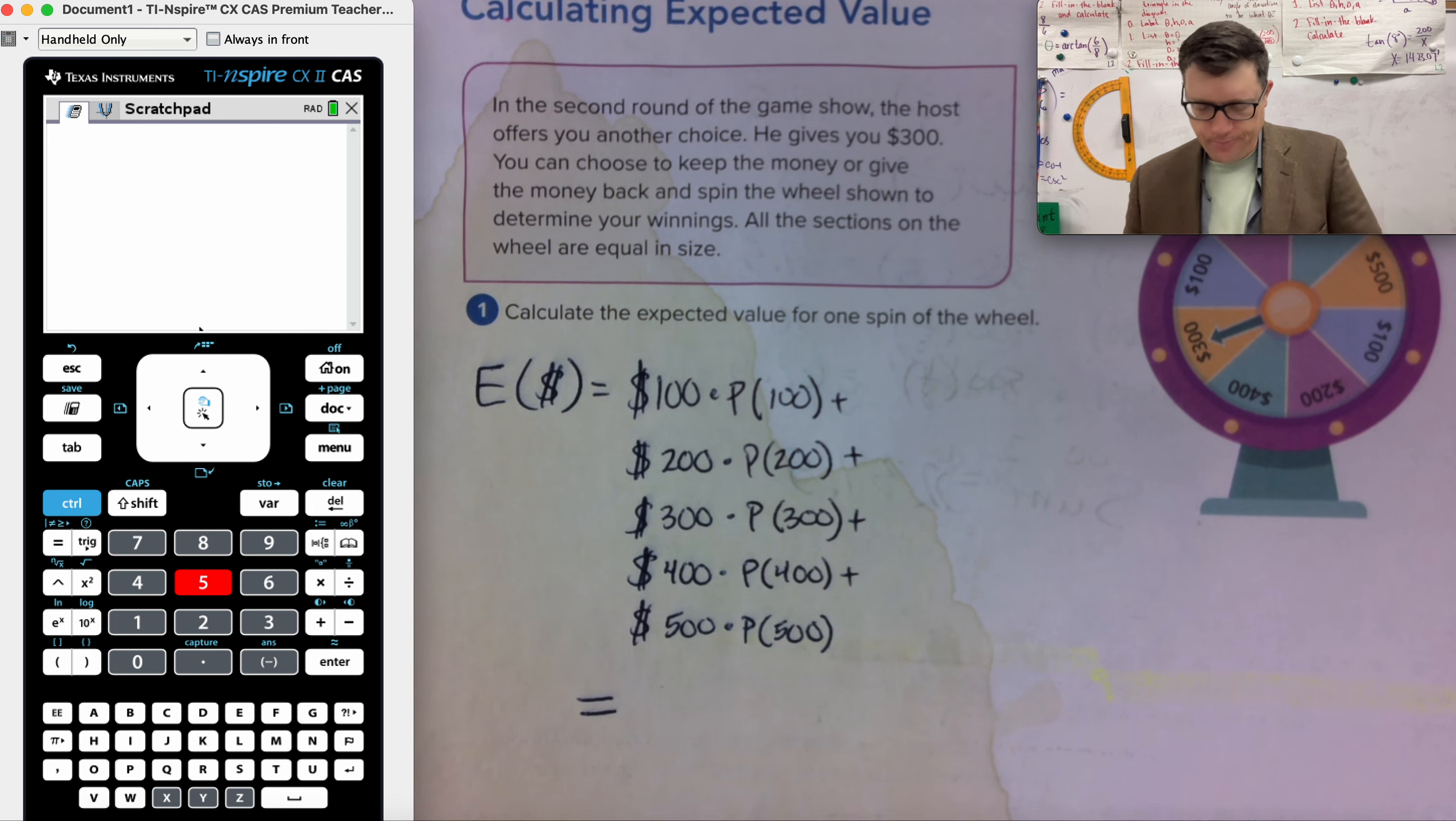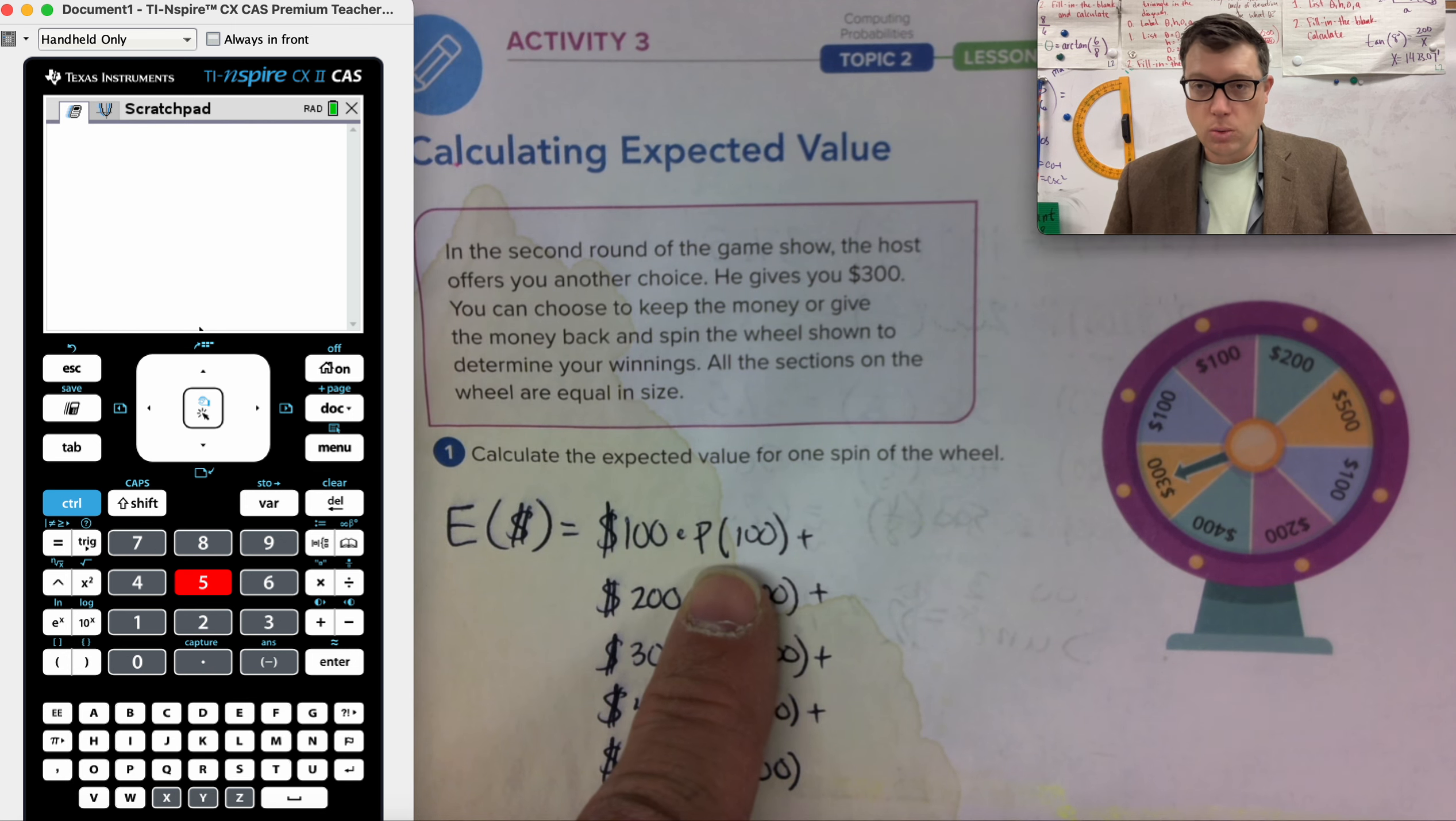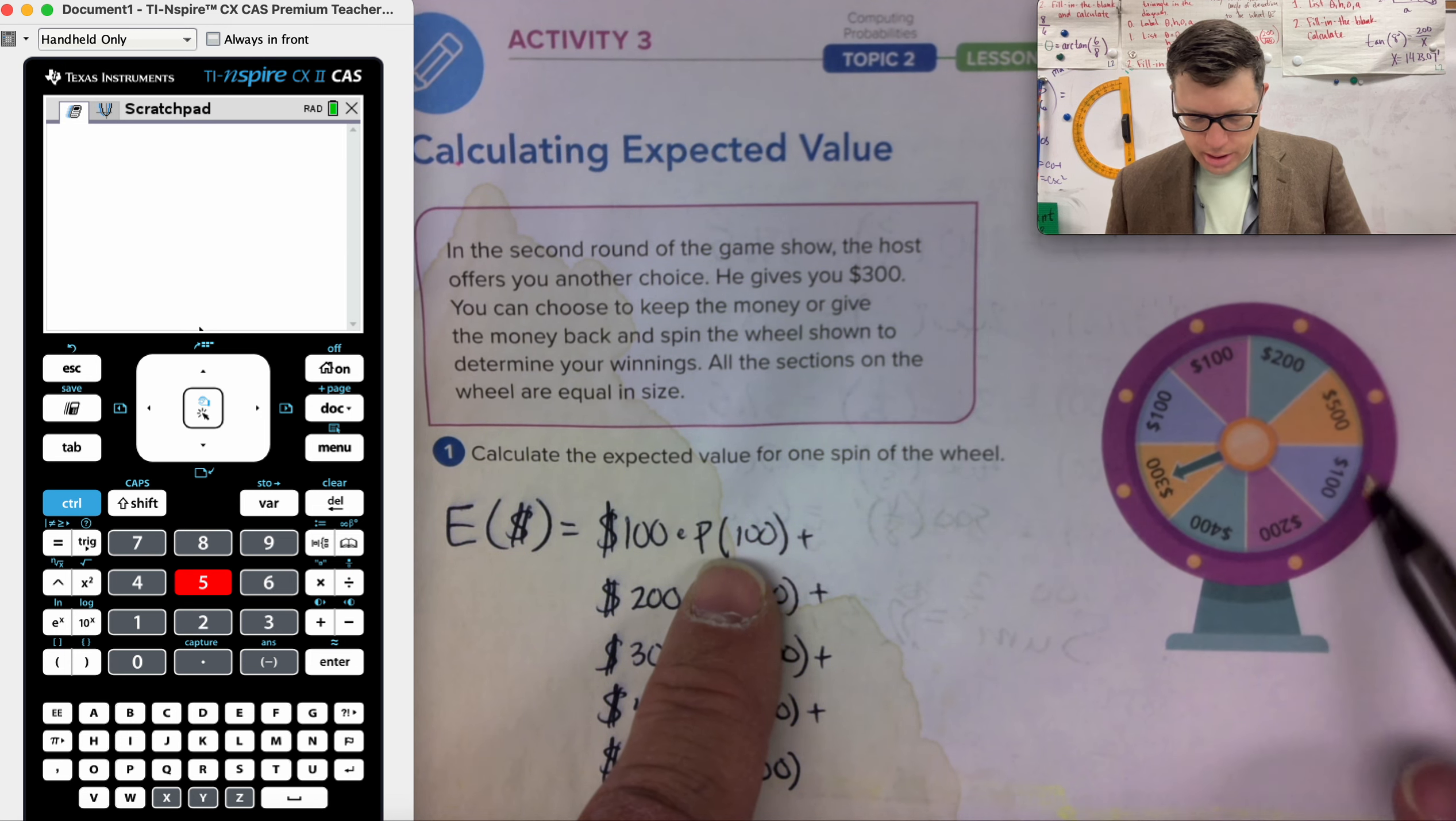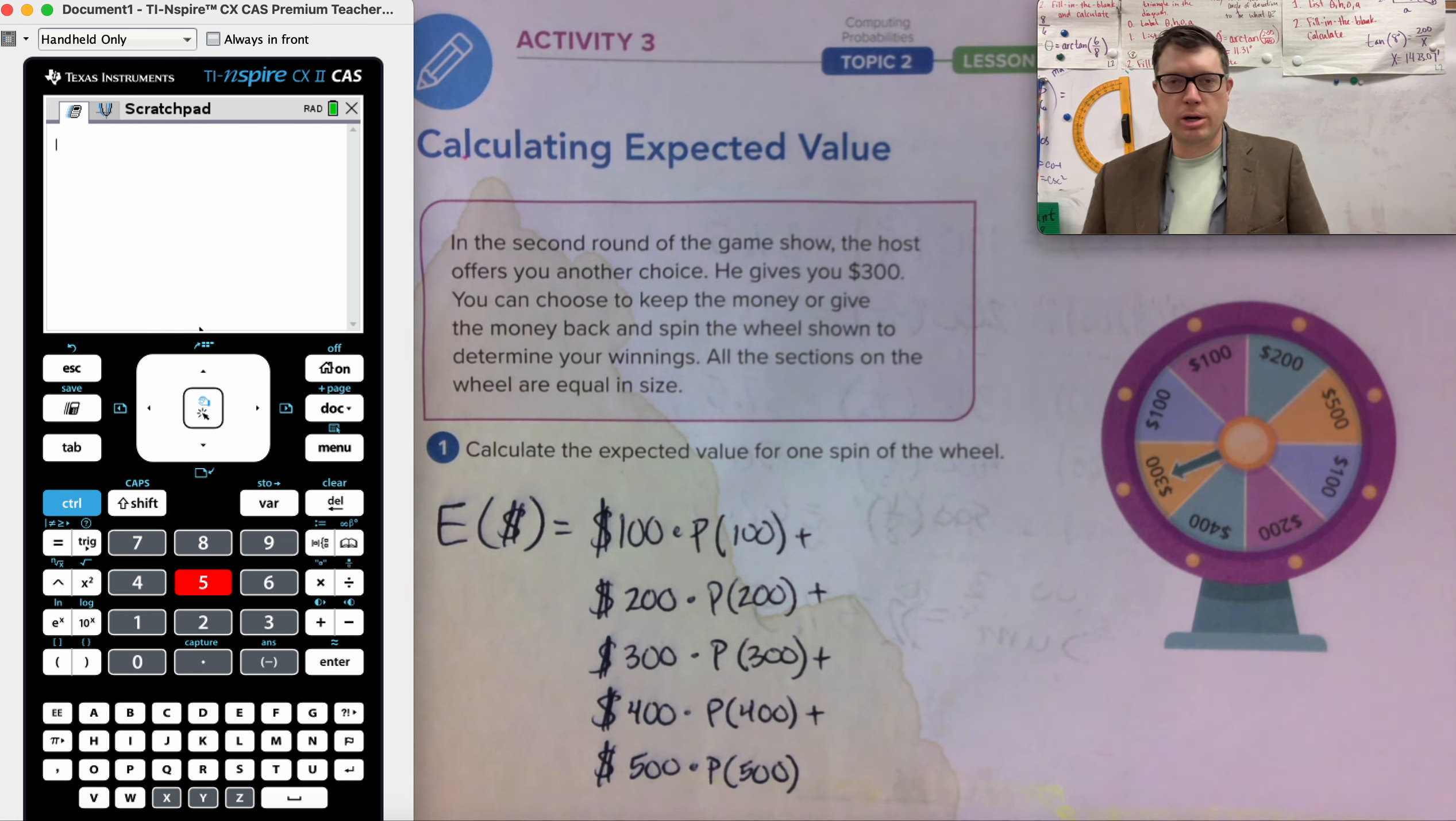This is the same wheel, right? $100, the probability of getting $100 is 100, 100, and 100. So I am holding on to $300. You get to choose to keep the money or give the money back and spin the wheel to determine your winnings. And then all sections on the wheel are in the same size.